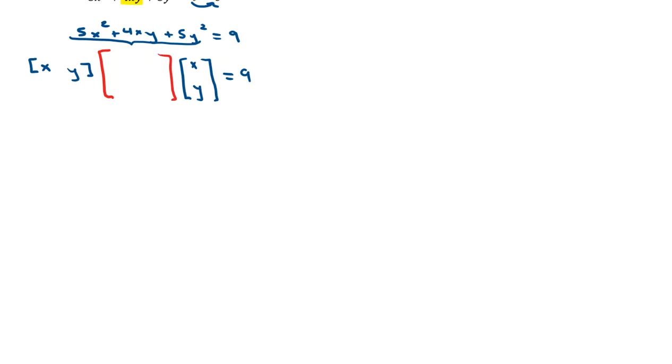Along the main diagonal, this 2 by 2 symmetric matrix is going to go the coefficients of the square terms, so 5 and 5. Then what we're going to do for the entries off the main diagonal is take half of the coefficient of the cross term, 4xy. So we're going to put a couple of 2s off the main diagonal.